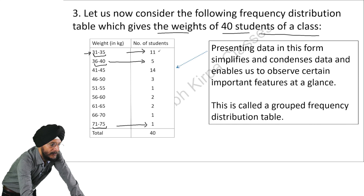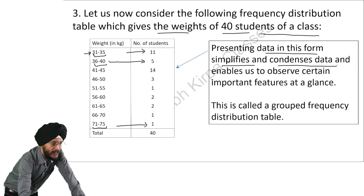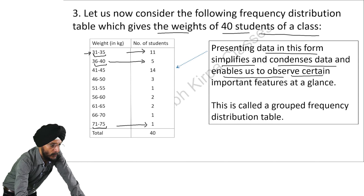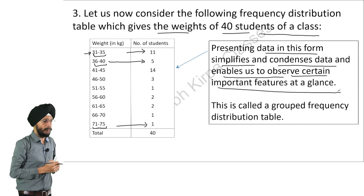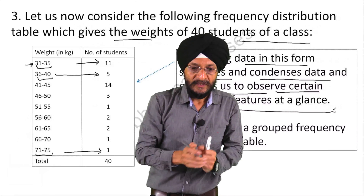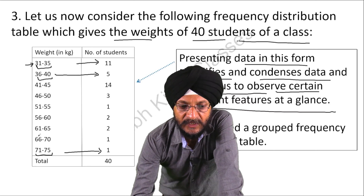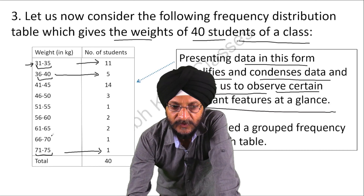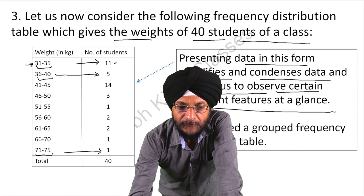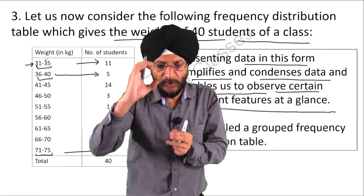We have mentioned the number of students against each weight group. Presenting data in this form simplifies and condenses data and enables us to observe certain important features at a glance. From this, we can easily say that there are only 2 students with weight equal to 66 kg or more, or that 11 students have weight between 31 to 35 kg.